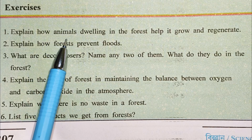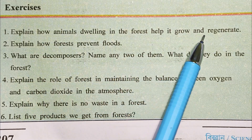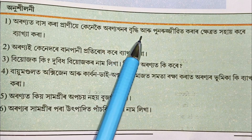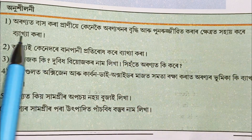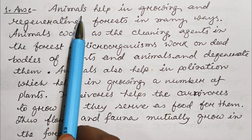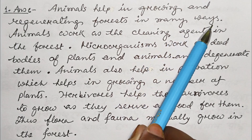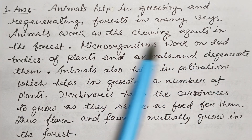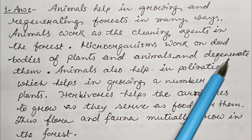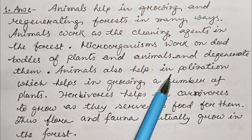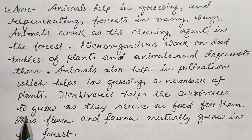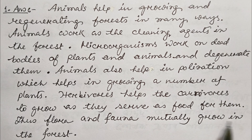Question number 1: Explain how animals dwelling in the forest help it grow and regenerate. Animals help in growing and regenerating forests in many ways. Animals work as a cleaning agent in the forest. Microorganisms work on dead bodies of plants and animals and decompose them. Animals also help in pollination which helps in growing a number of plants. Herbivores help the carnivores to grow as they serve as food for them. Thus, flora and fauna mutually grow in the forest.